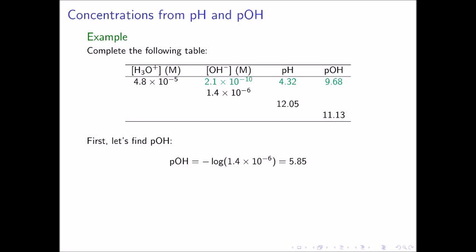For the second row, we are given the hydroxide ion concentration to be 1.4 times 10 to the negative 6. The first step is to find the pOH for this solution. The pOH is negative log of 1.4 times 10 to the negative 6, or 5.85. We can now use the relationship between pH and pOH to calculate the pH of the solution. For this solution, the pH is equal to 14.00 minus 5.85, which is equal to 8.15.